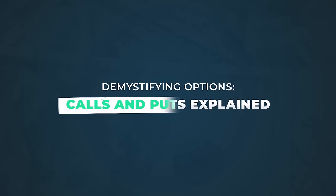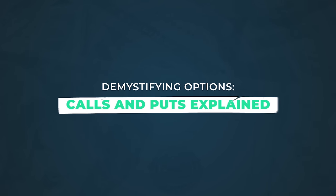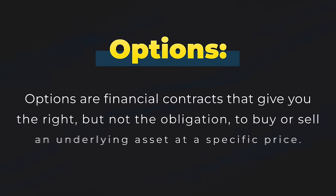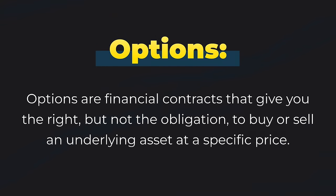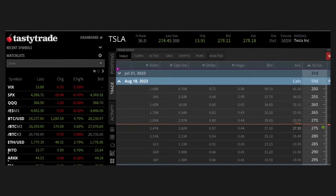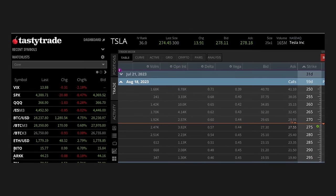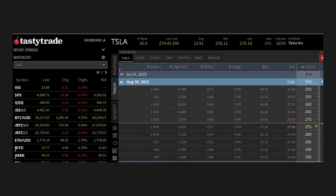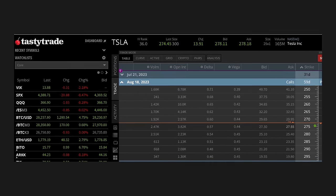Let's start by defining what options are. Options are financial contracts that give you the right, but not the obligation, to buy or sell an underlying asset at a specific price. You can trade options using the same brokerage platforms that you use to buy and sell stocks. There are two types of options: calls and puts.